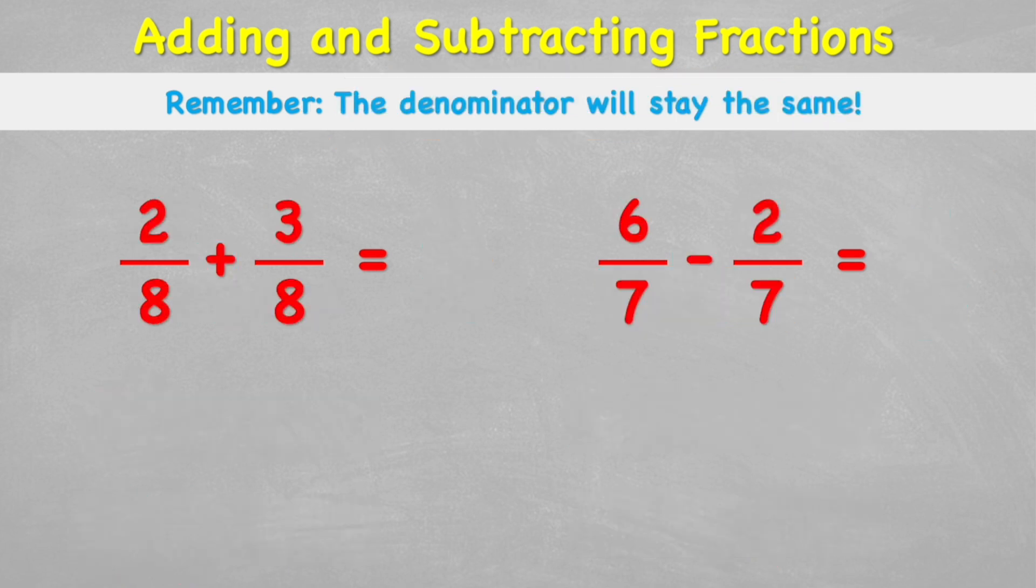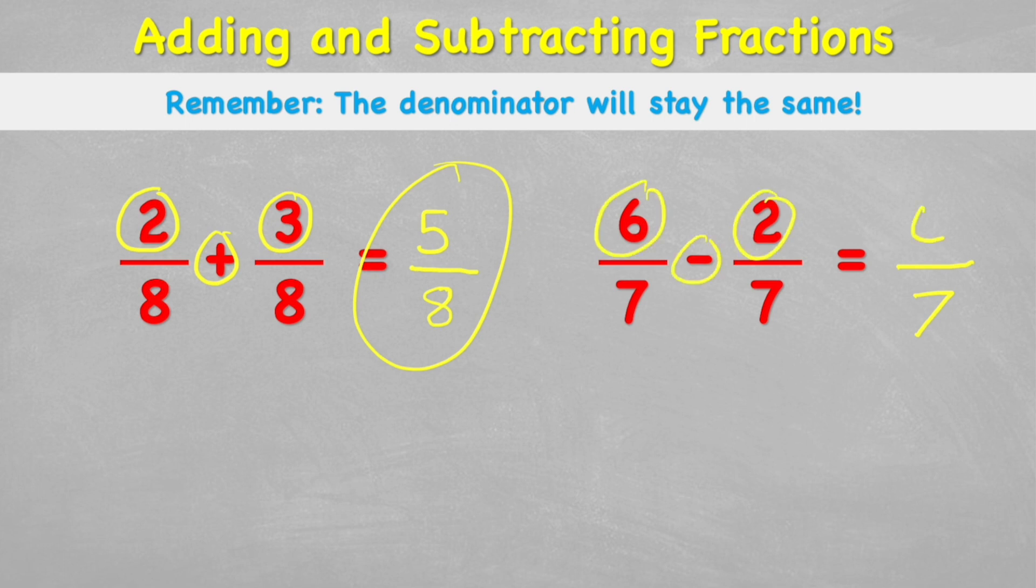Let's look at a couple of harder ones, but without pictures this time. So if I have two eighths plus three eighths, I know I'm working with eighths. So I know my answer is going to be in eighths. And then all I need to do is add my numerators. Two plus three equals five. Two eighths plus three eighths equals five eighths. Let's have a look at the next one. We have six sevenths minus two sevenths. So I know my answer is going to be in sevenths. And then I can just do six minus two equals four. Six sevenths subtract two sevenths equals four sevenths. How easy is that?